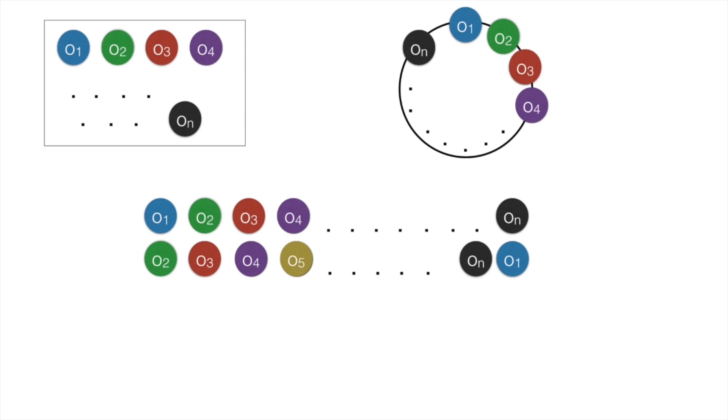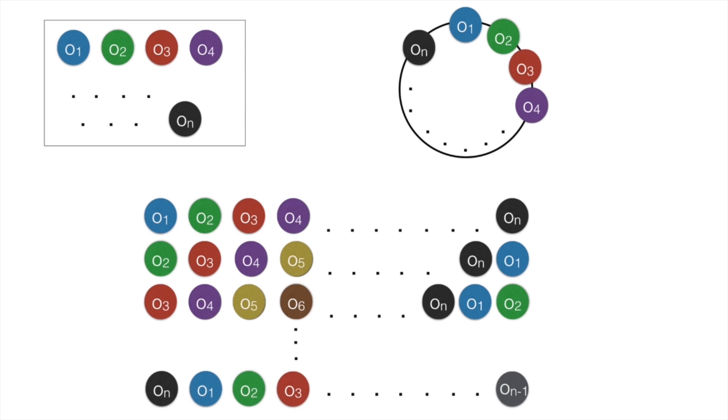Similarly, another such linear permutation would be o3, o4, o5, o6 till o n, o1 and o2. It turns out that if we go on, we will get n such linear permutations.